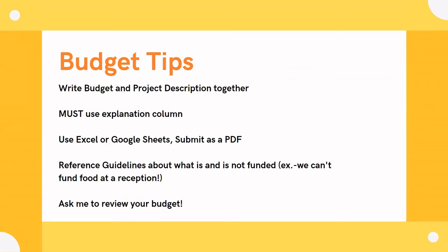Some tips for writing your budget: write your budget and project description together to ensure they align with no discrepancies. Definitely use the explanation column — panelists look at it on every application. When you download the template, you can use Excel or Google Sheets, but submit it as a PDF. Reference the grant guidelines throughout to see what is and isn't funded — for example, food and magicians are not eligible. Feel free to send me your budget and I can quickly review it.